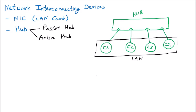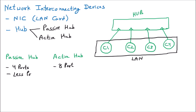A LAN is a network having less than 10 kilometers of range — for example, one building or one office connected together. The advantage of the hub is that we can connect multiple computers together and share data. Now let's discuss the difference between active and passive hubs. The passive hub was initially invented with four ports, and the active hub had eight ports at that time.